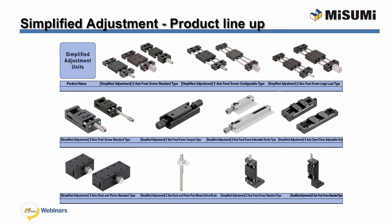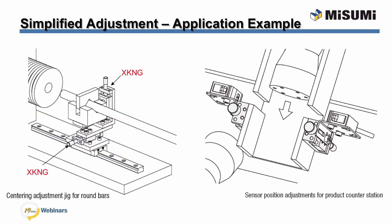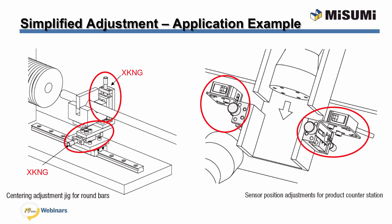Let's take a look at our simplified adjustment stages. This efficient design provides coarse adjustment without having to assemble or disassemble your application every time adjustments are required. Here is the remainder of our simplified stage product line. Like the previous stages, you can use two simplified units to create an x-y stage system. In this application example, you will see the picture on the left utilizing our XKNG model to adjust the x and z-axis as a centering adjustment jig for round bars.